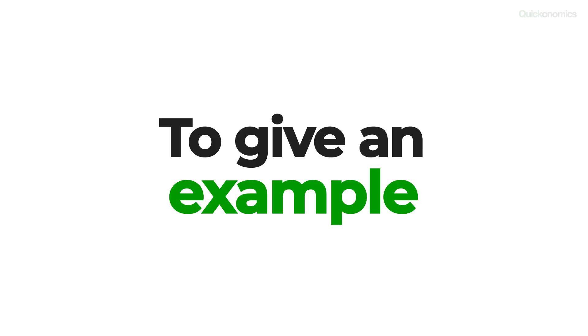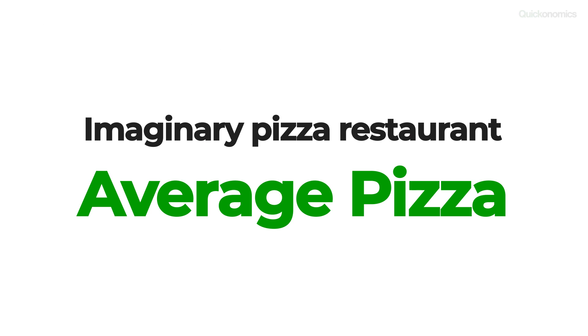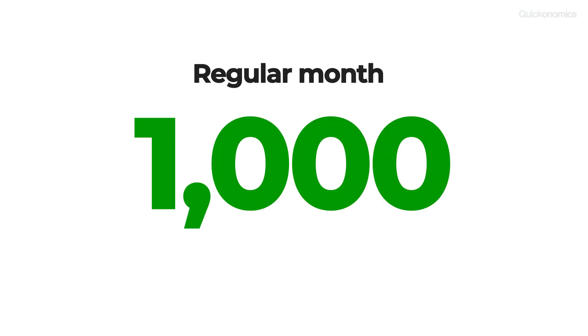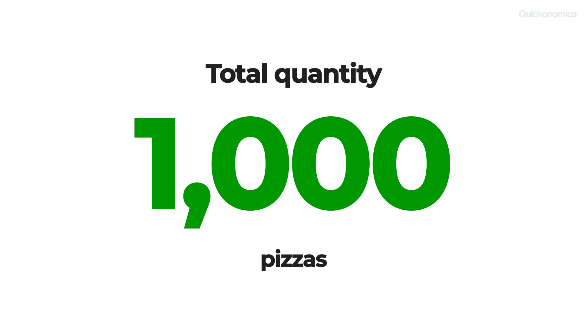To give an example, let's look at an imaginary pizza restaurant — we'll call it Average Pizza. In a regular month, they sell about 1000 pizzas. That means the total quantity is equal to 1000 pizzas. No complicated calculations needed here.